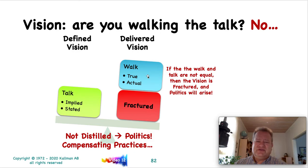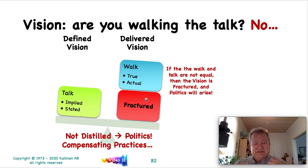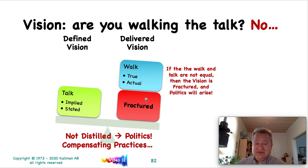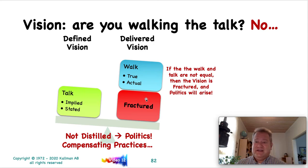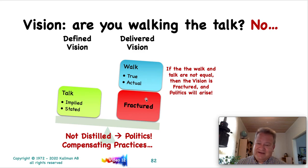So if the walk and the talk aren't equal, then the vision is fractured and politics will arise. These are pretty good pictures showing how either your vision is in balance — the talk and the walk — or it's fractured. And if it's a fractured vision, compensating practices are like Band-Aids on lethal wounds — they're just gushing, and a Band-Aid just isn't going to do the trick.